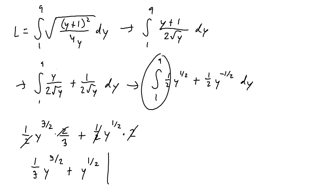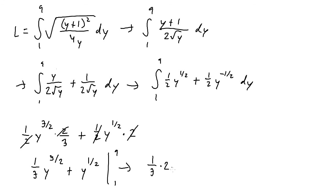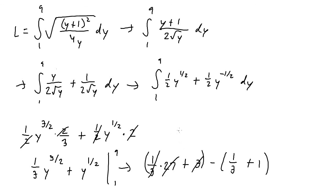Plugging in y equals 9: 1 third times 9 to the 3 halves is 1 third times 27 equals 9, plus 9 to the 1 half equals 3, giving 12. Plugging in y equals 1: 1 third times 1 to the 3 halves is 1 third, plus 1 to the 1 half equals 1, giving 4 thirds. So 12 minus 4 thirds equals 36 thirds minus 4 thirds, giving a final answer of 32 over 3.